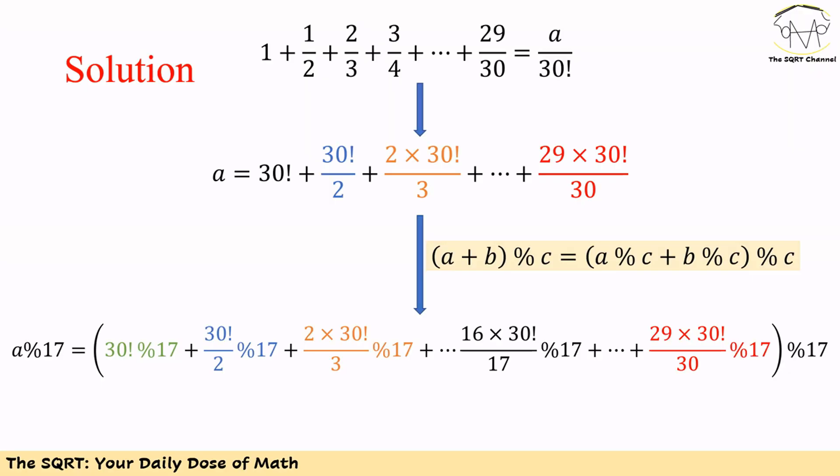Based on this notation, let's simplify the equation. In the original equation we have 1 plus 1/2 plus 2/3, and so on up to 29/30, equal to a over 30 factorial. We multiply both sides by 30 factorial, and then a equals 30 factorial plus 30 factorial over 2, up to 29 times 30 factorial over 30.